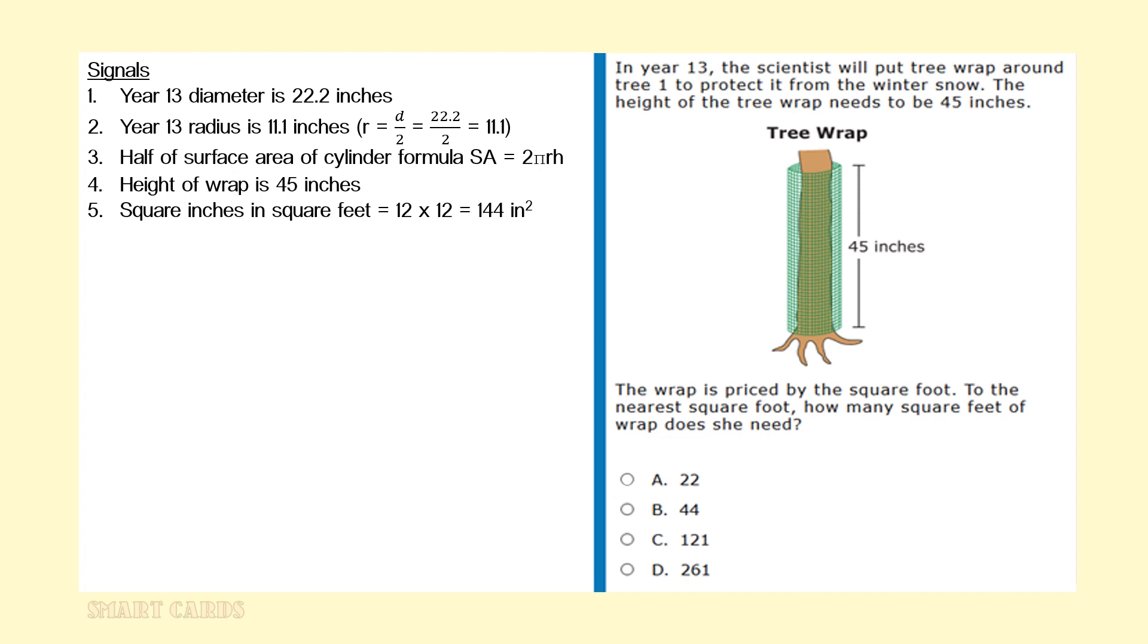We need to know the height of the wrap, which is 45 inches. And we need the conversion factor square inches and square feet equals 144 square inches. Here's the solution to this problem. SA or surface area equals 2 pi RH, and we're going to substitute the radius with 11.1, and we're going to substitute the height of the wrap with 45. We're going to substitute pi with 3.14, and then we're going to multiply it all together. We're going to come up with a final solution of 3136.86 square inches.